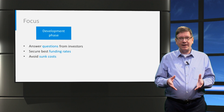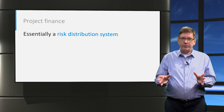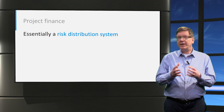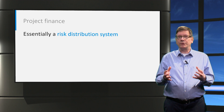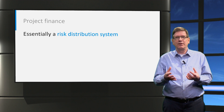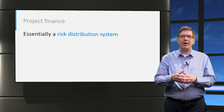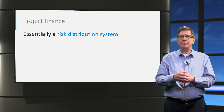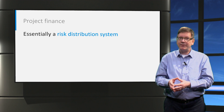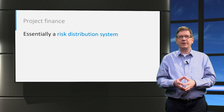Project finance is essentially a risk distribution system. All the risks that are retained by the project company — by the SPV — will increase the funding costs or may even make the project financing fail. So we go to great lengths to allocate risks to other parties, trying to move them away from the SPV to a party that is best able to assess and manage that particular risk.